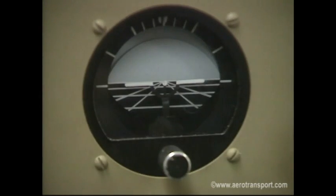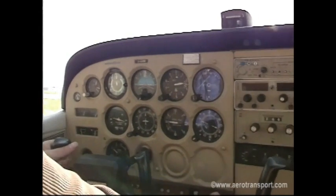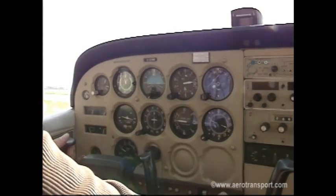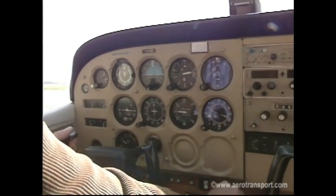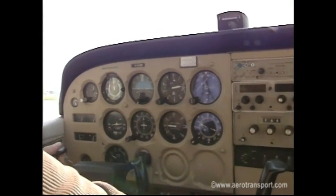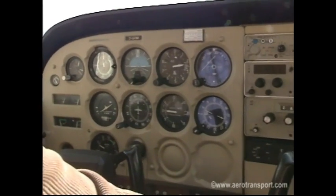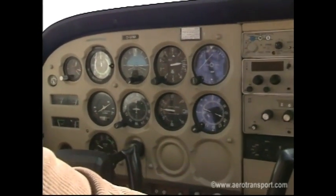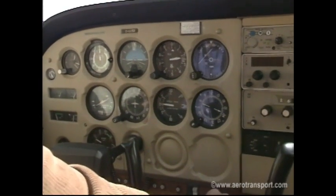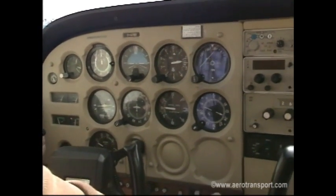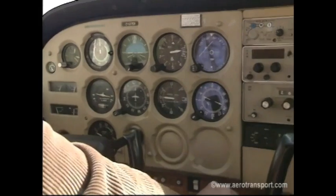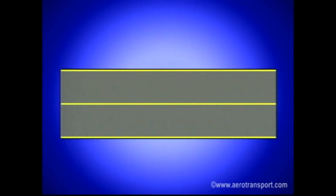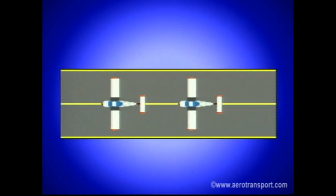While taxiing in a clear area, there are three instruments you should check: the turn and bank indicator, the attitude indicator, and the heading indicator. The attitude indicator should remain steady at all times when taxiing. While taxiing straight, the turn and bank needle and ball should both be straight. The heading indicator should hold steady. In a left turn, the turn and bank needle should move to the left and the ball to the right, and the heading indicator will show a decreasing number of degrees. When turning right, the opposite occurs.